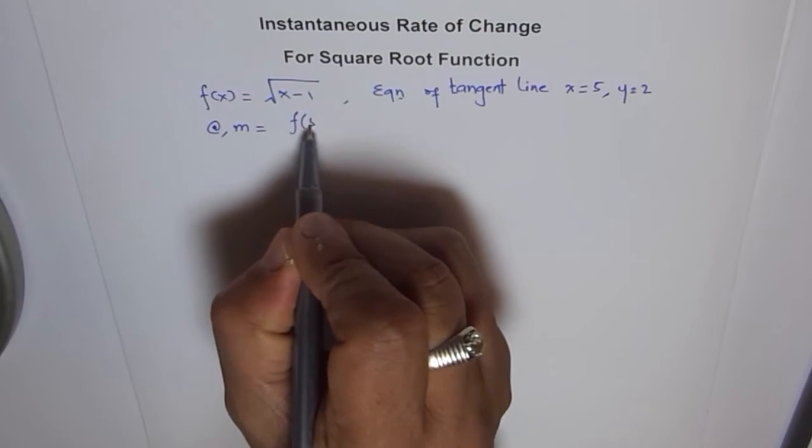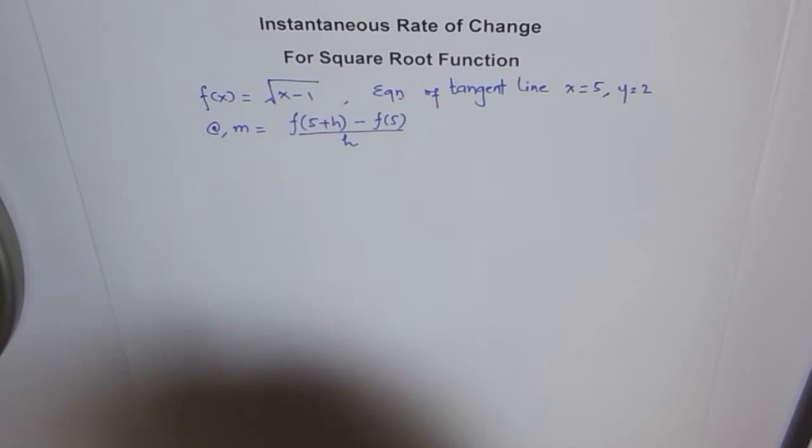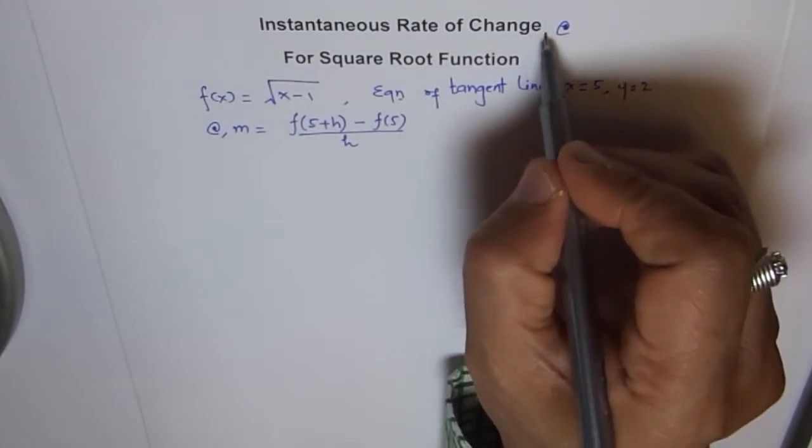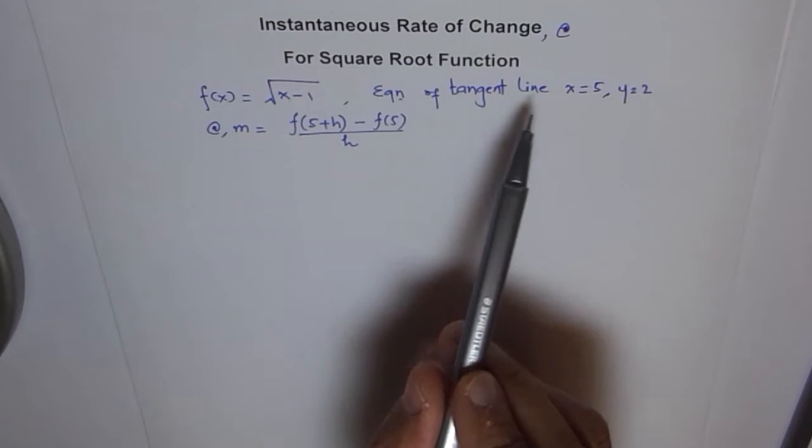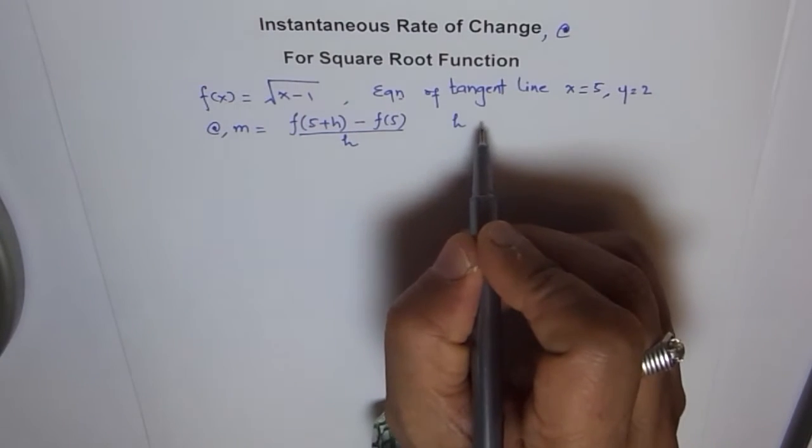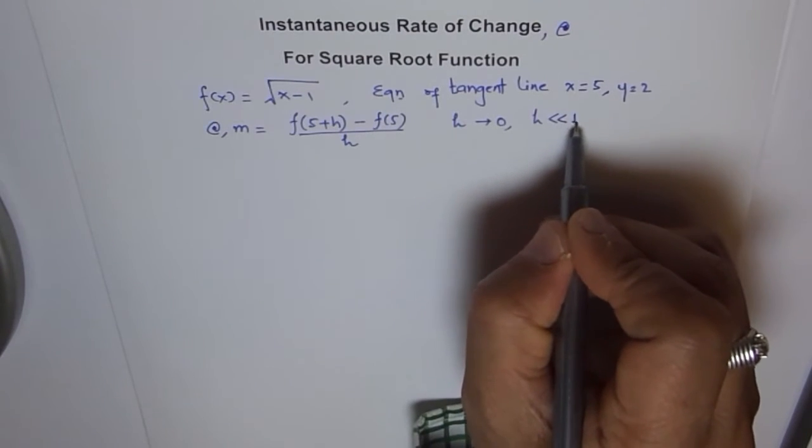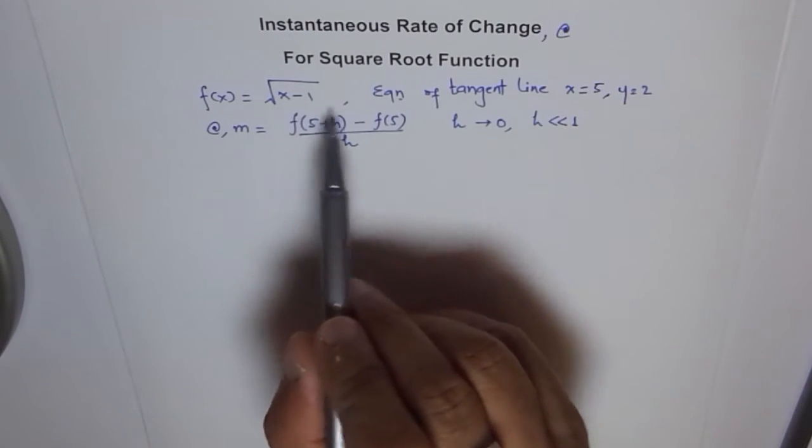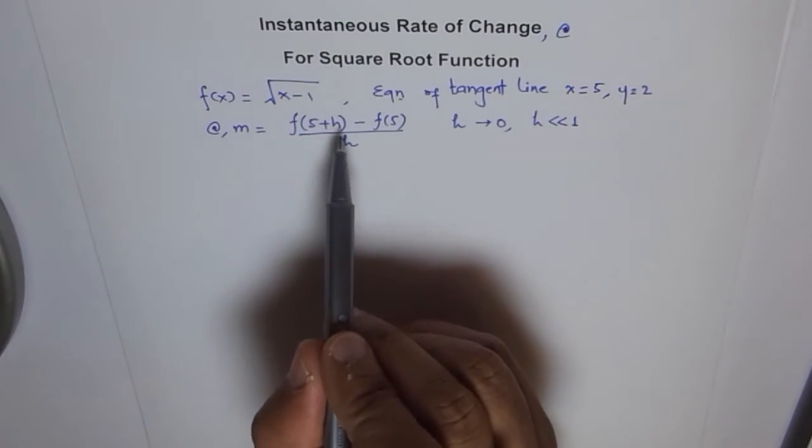At point 5, that means f(5+h) minus f(5) over h should be my slope or the instantaneous rate of change. So as you see, I have been using this symbol for instantaneous rate of change. So instantaneous rate of change will also give me slope of the tangent line at this point. Where h is approaching 0, and sometimes we also write where h is very, very less as compared to 1. At times we can straight away find the instantaneous rate of change by plugging a value of h as 0.001.